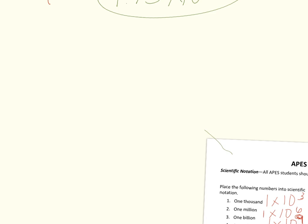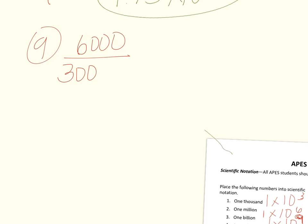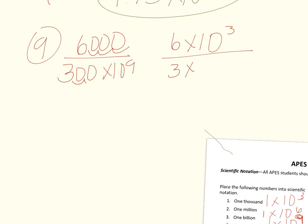Going on to number nine: six thousand divided by three hundred billion. Six thousand is six times ten to the third, and three hundred billion is three times ten to the eleventh. When dividing, divide six by three to get two, then subtract the exponents: three minus eleven equals negative eight. So the answer is two times ten to the negative eighth.